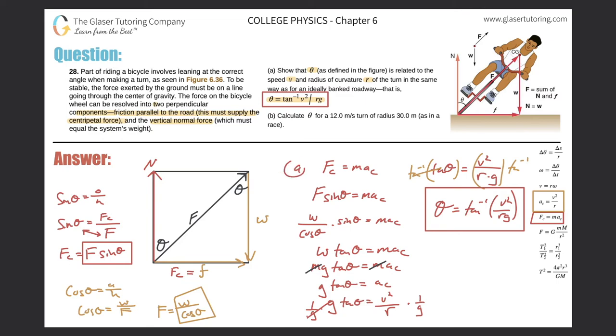Not too bad, that was letter A. Let's take a look now at letter B. Calculate theta for a 12 meter per second turn of radius 30 meters. It looks like we're just plugging it in. Thank God.